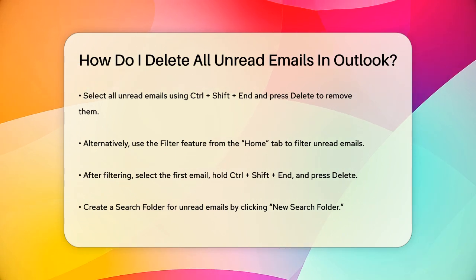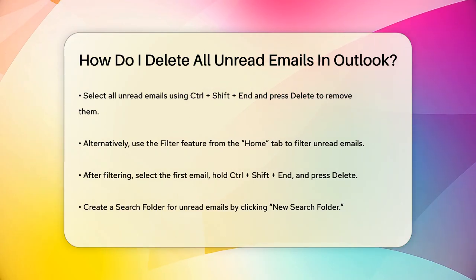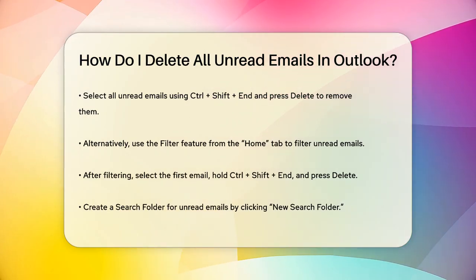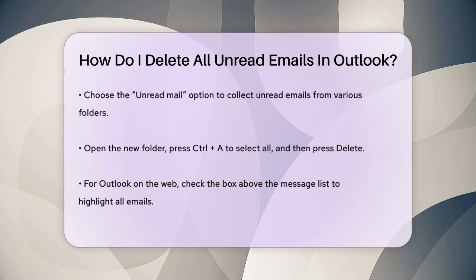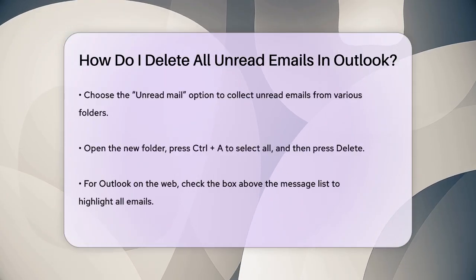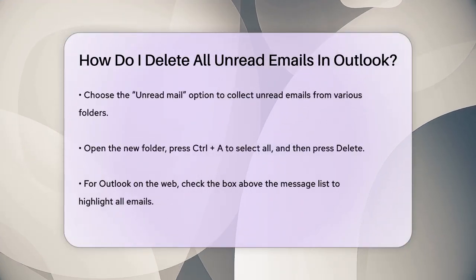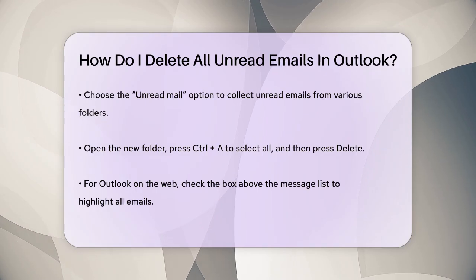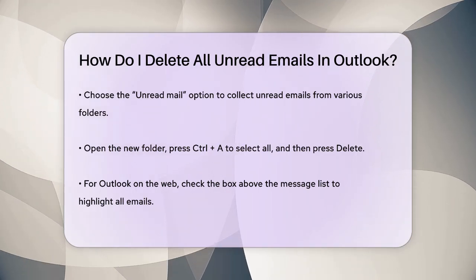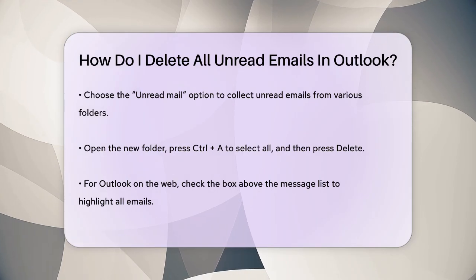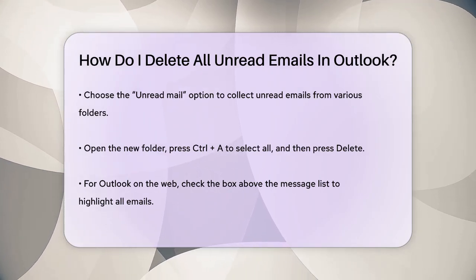You can also use the Search Folder feature, which is very convenient for collecting unread emails from different folders. Go to the main Outlook Mail screen, click on the New Search Folder button at the upper left corner, and select the Unread Mail option. This will create a new folder that collects all your unread emails. Open this folder, press Ctrl-A to select all the emails, and then press Delete to remove them.